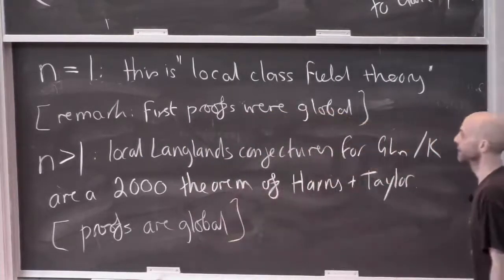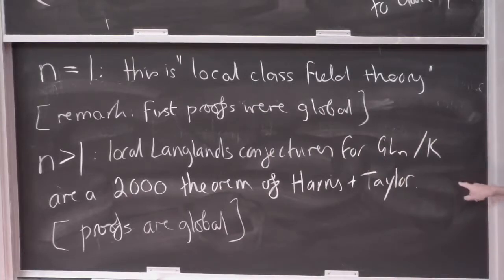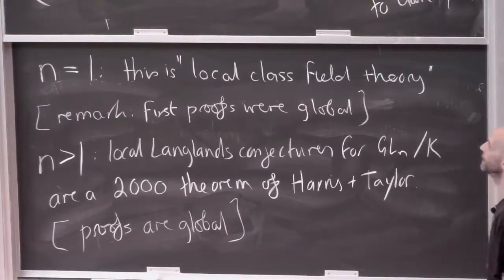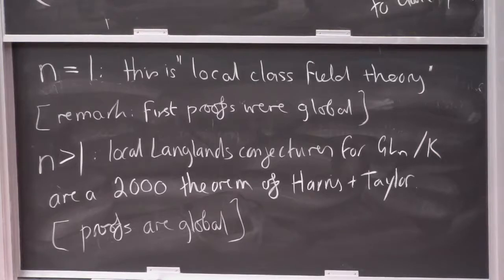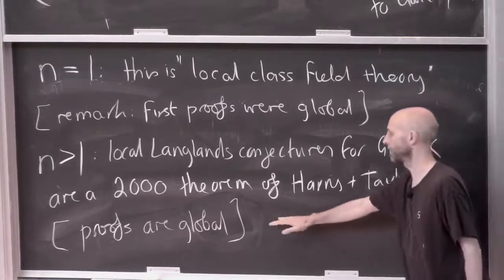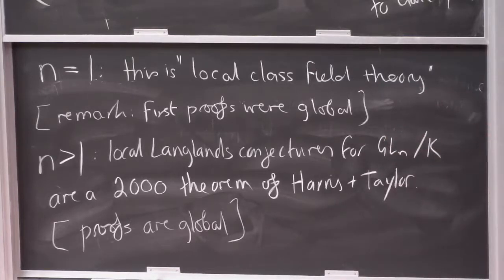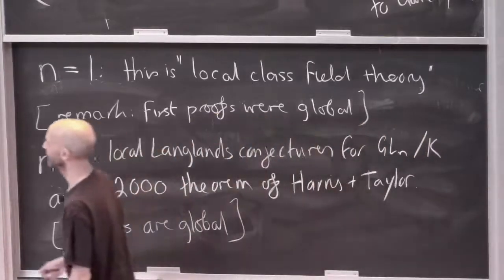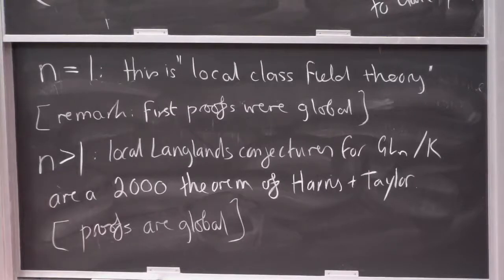By global I mean the proofs use number fields. At some stage in the proof you have K a finite extension of Q_p, and you say: K must be the completion at some prime above p of some number field L over Q, and then you do things with this number field instead. It's slightly strange, because you would imagine that local assertions should have local proofs since they're simpler than global things. Now there are local proofs of local class field theory, but as far as I know there are still really no local proofs for n > 1. In some funny sense, there's almost not a local statement of the local Langlands correspondence, because you have to say what it means for this bijection to be canonical, and that turns out to be rather trickier than one might hope.